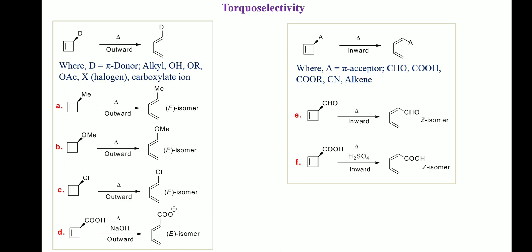Now we will discuss torque selectivity in electrocyclic reactions. During the electrocyclic ring-opening process, pi-donor substituents such as alkyl, OH, methoxy, and halogens tend to move outward to minimize repulsive interaction with the pi system of the polyene in the transition state, while pi-acceptor substituents like aldehyde, carboxylic acid, ester, cyano, and olefins tend to move inward to stabilize the transition state by interaction with the donor lobes of the pi orbitals of the breaking sigma bond. This preferential movement of substituents during ring-opening is called torque selectivity.